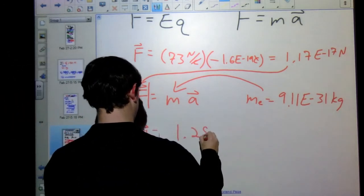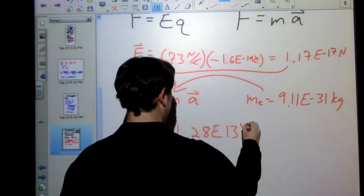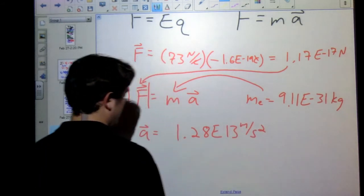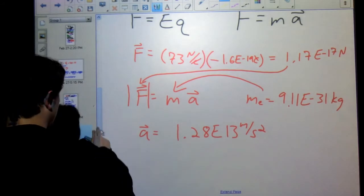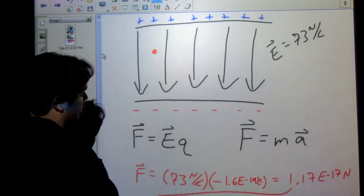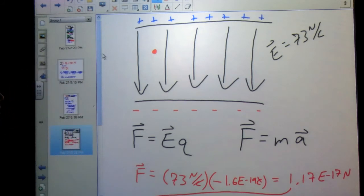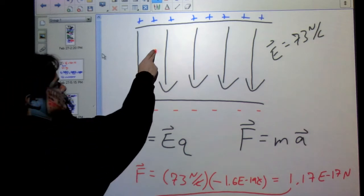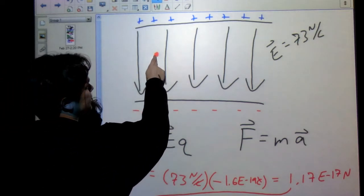This number is my force, and I find out that my acceleration equals 1.28 times 10 to the 13th meters per second squared. Finally, I want to know the direction - which way is it going to accelerate? Well, our electric field, the arrows always point in which direction? The direction a positive charge would move. Which way is this guy, a negative charge, going to move?